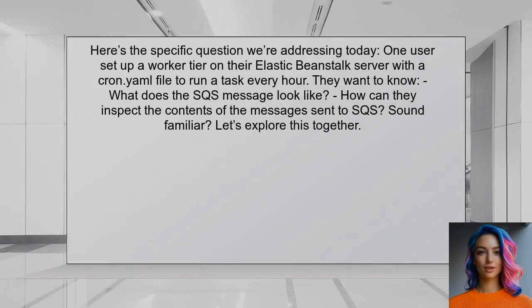Here's the specific question we're addressing today. One user set up a worker tier on their Elastic Beanstalk server with a cron.yaml file to run a task every hour. They want to know what the message looks like from SQS that triggers this cron job, or how to inspect the contents of the messages being sent to SQS.